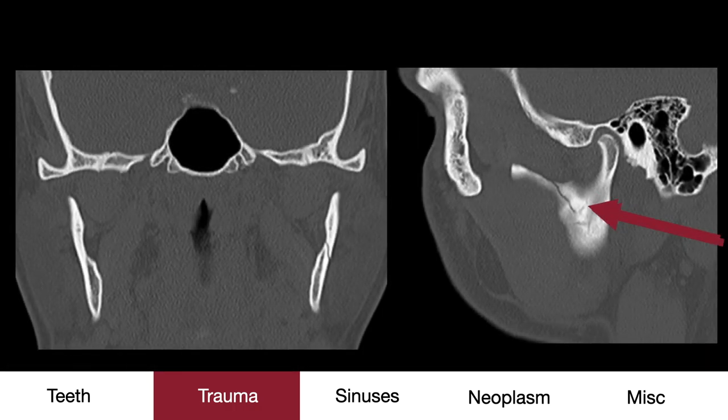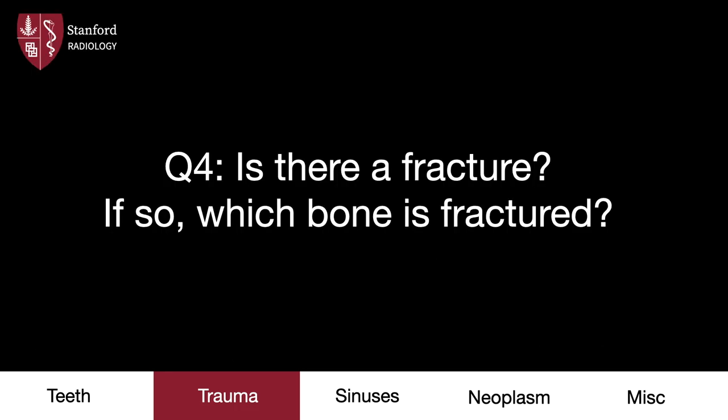A follow-up CT confirms our initial suspicions. Note that the left TMJ is located, which is a pertinent negative. Here's our next case — case four. Is there a fracture, and if so, which bone is fractured?